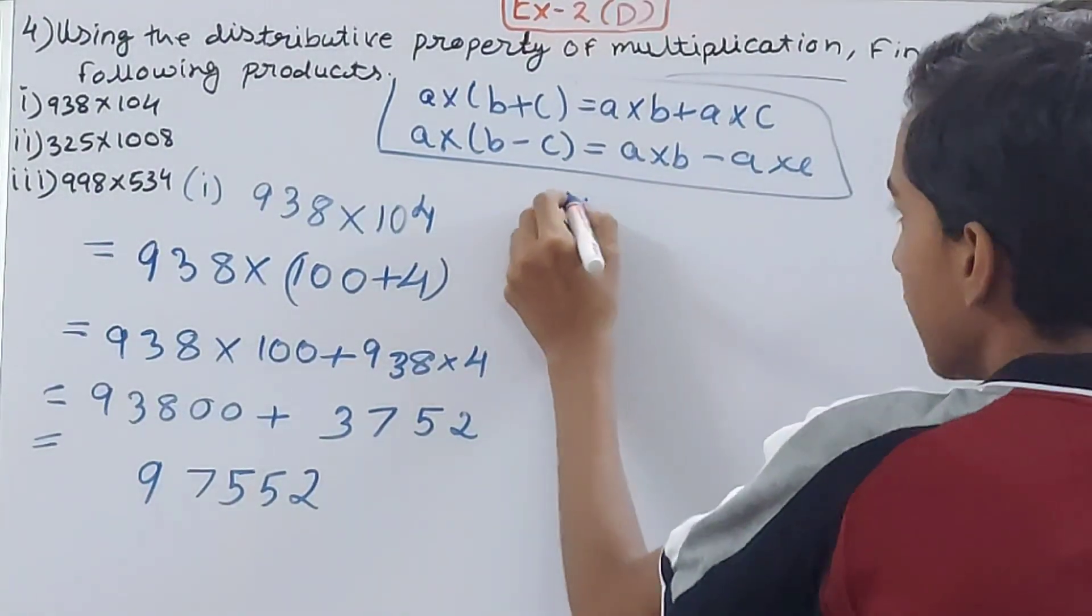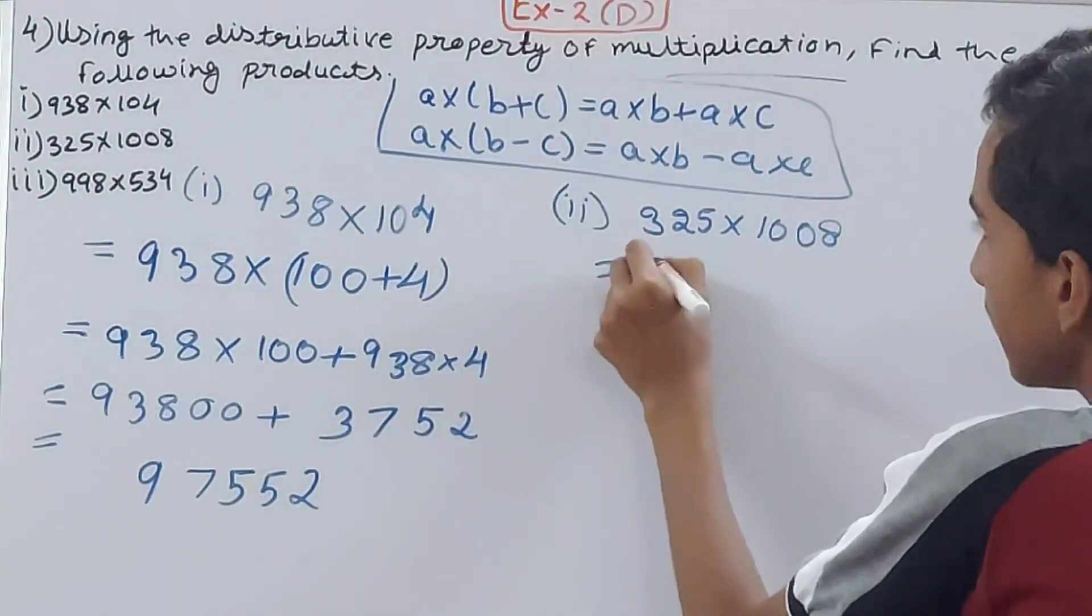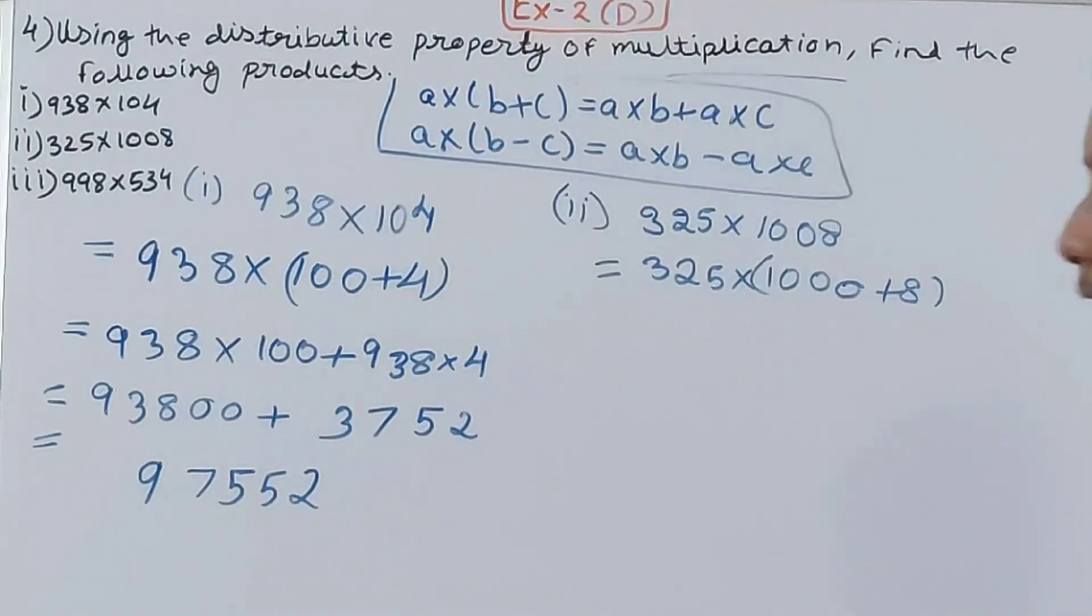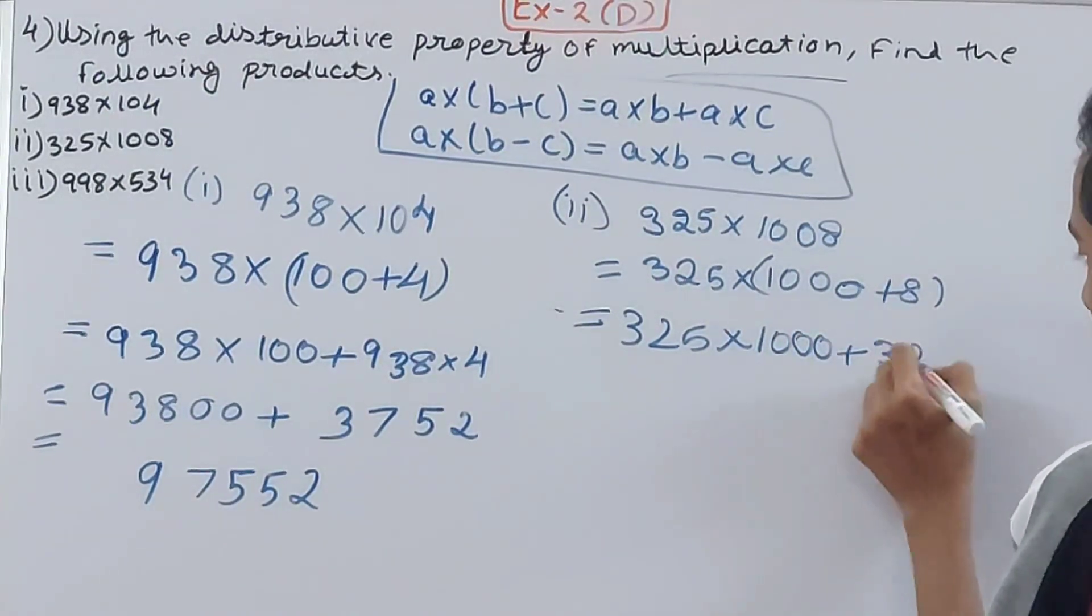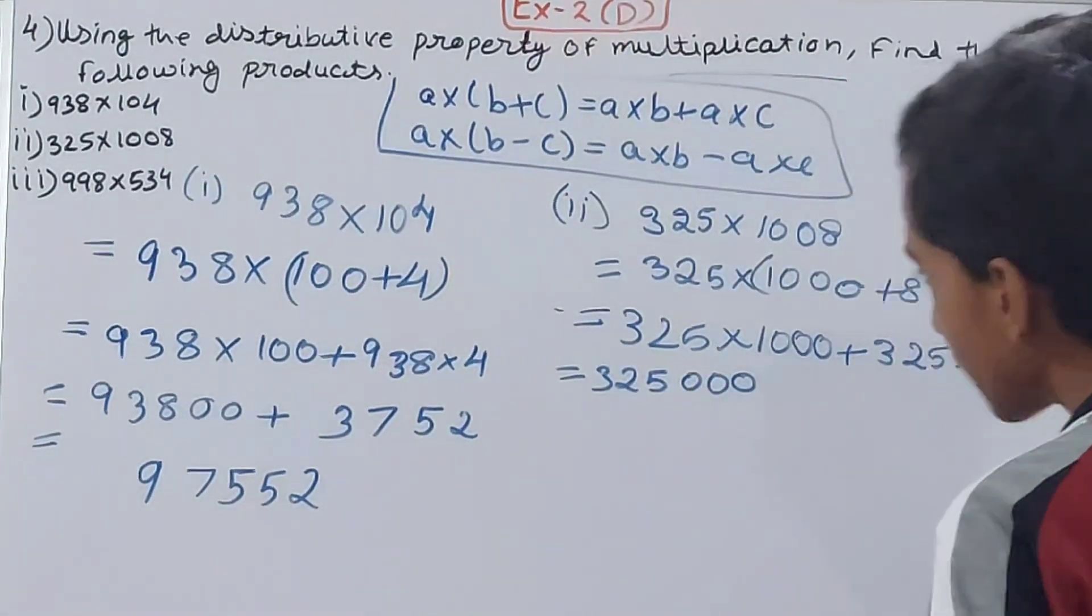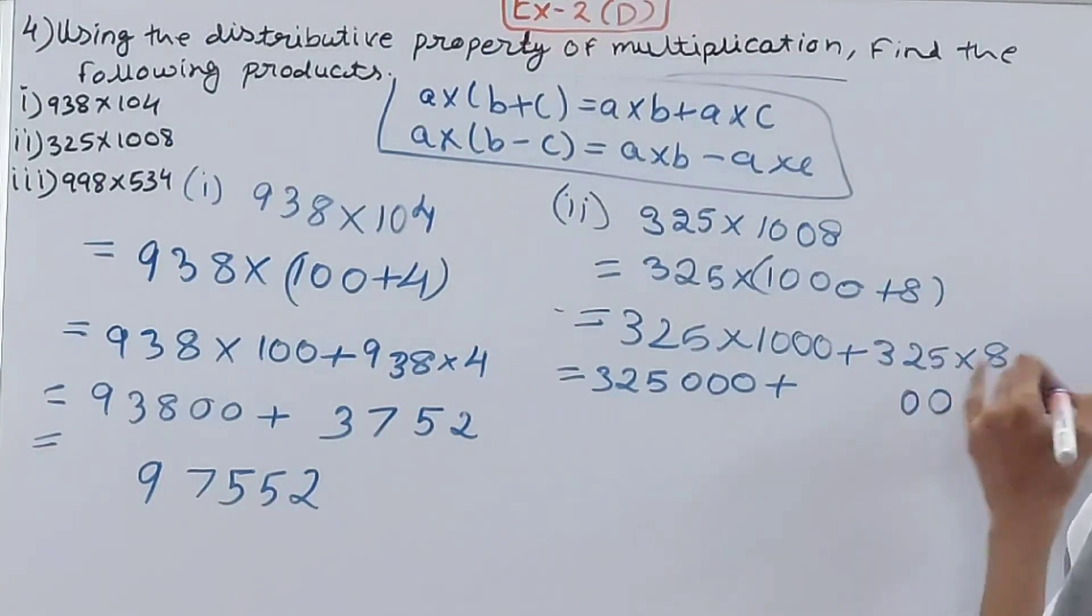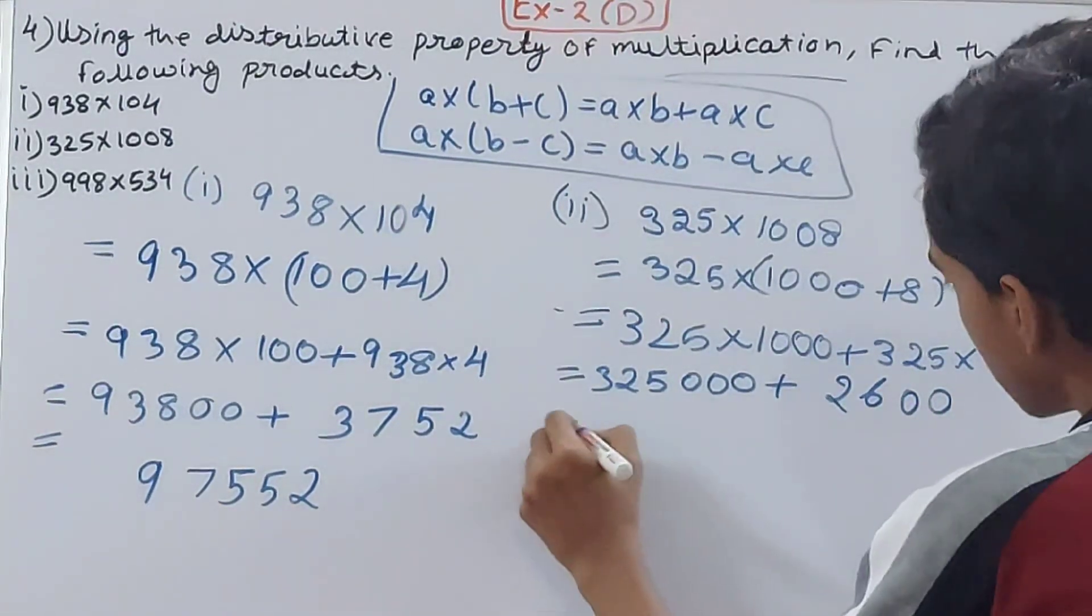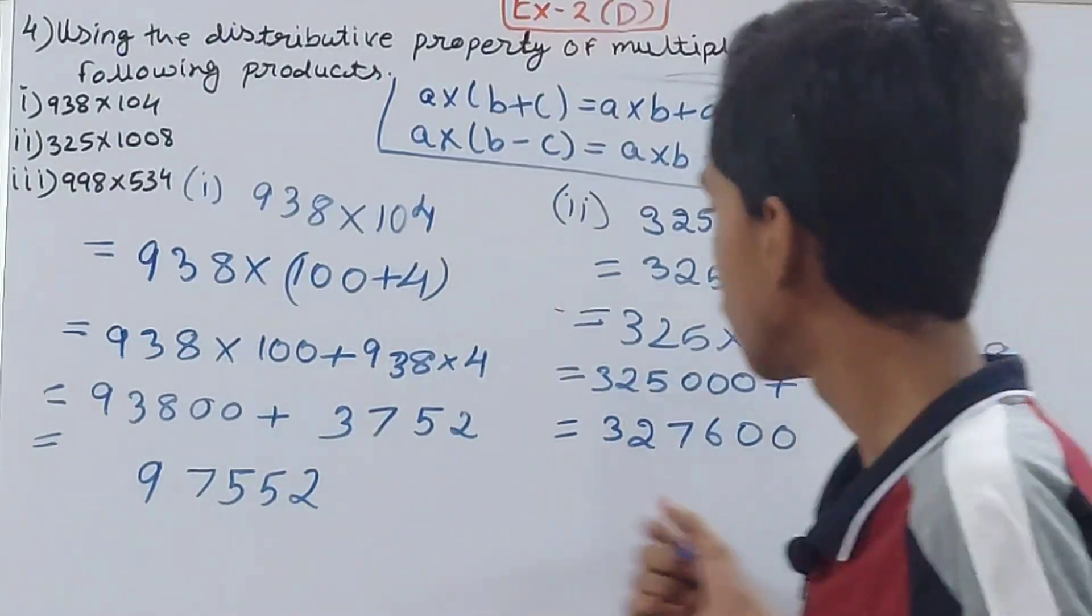The second part: 325 × 1008. Same thing here, 325 × (1000 + 8). Now multiply: 325 × 1000 plus 325 × 8. This is 325,000 plus 2,600, which equals 327,600.